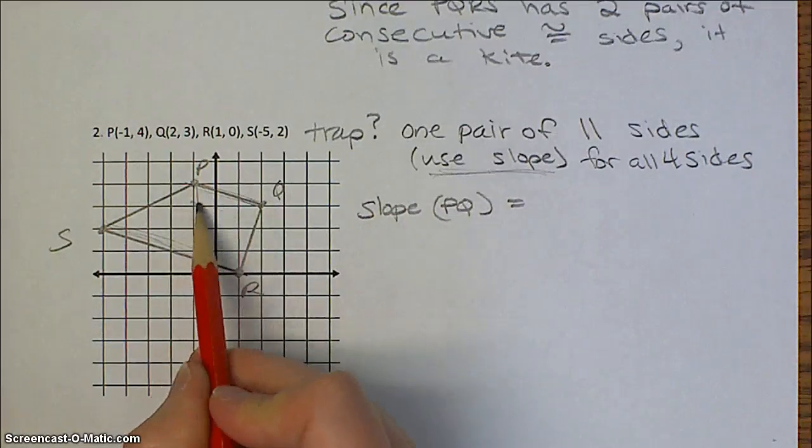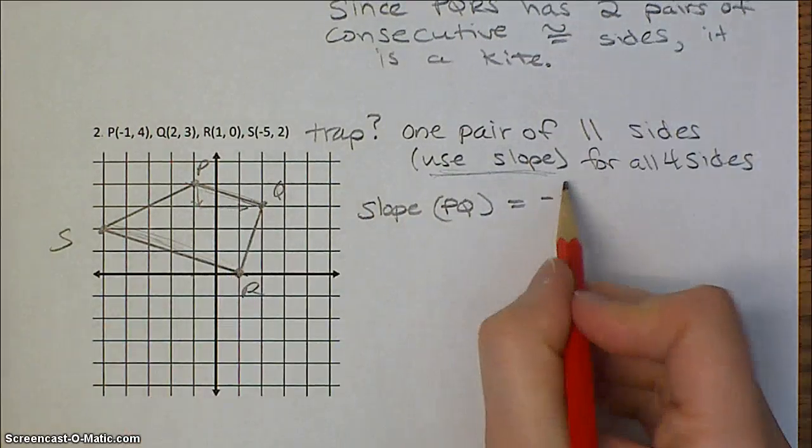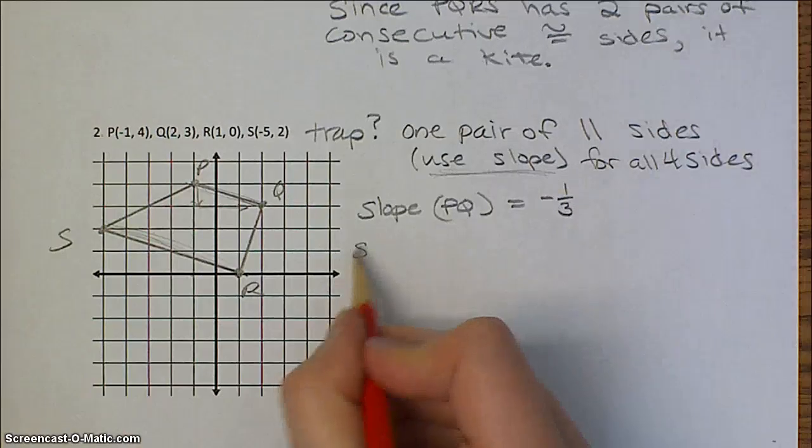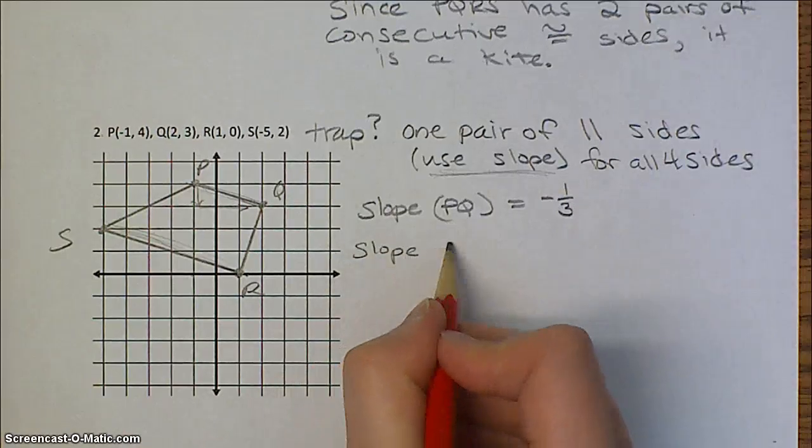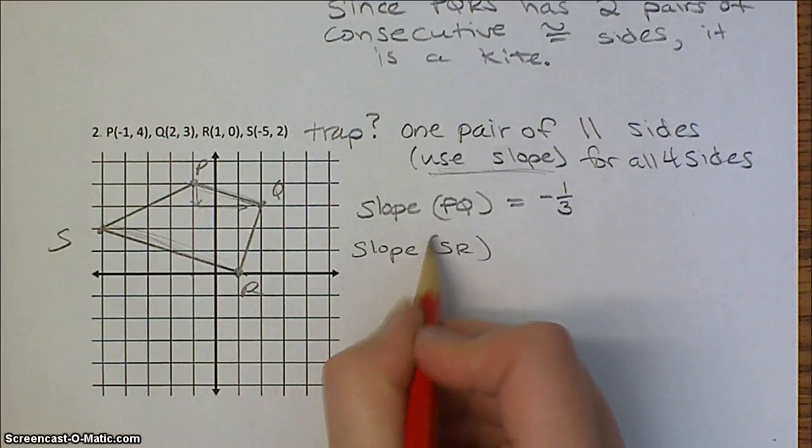So we're going to start by finding the slope of PQ, and that's going to be down 1 to the right 3, so negative 1 over 3.